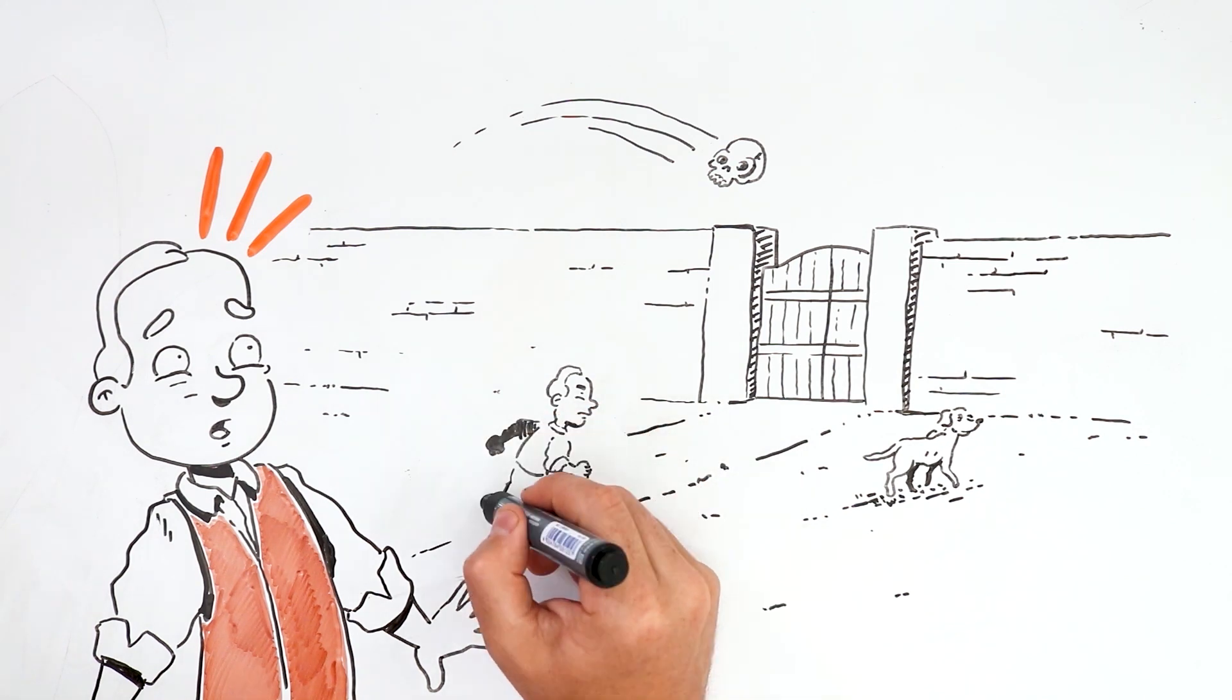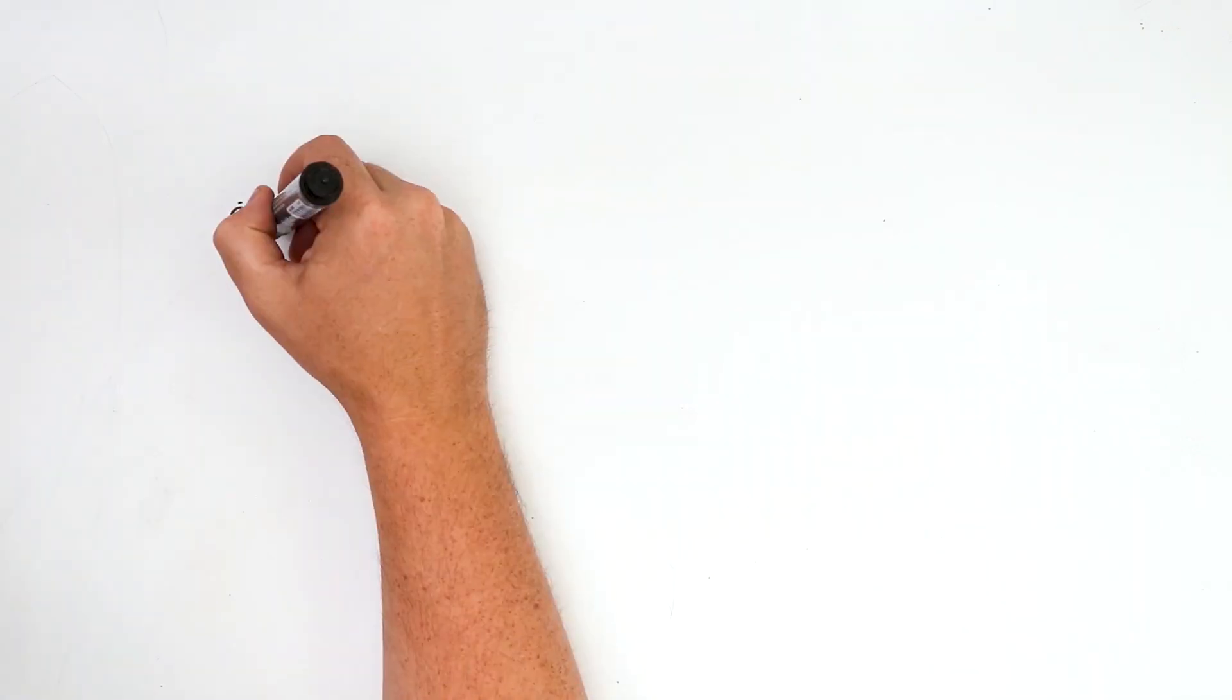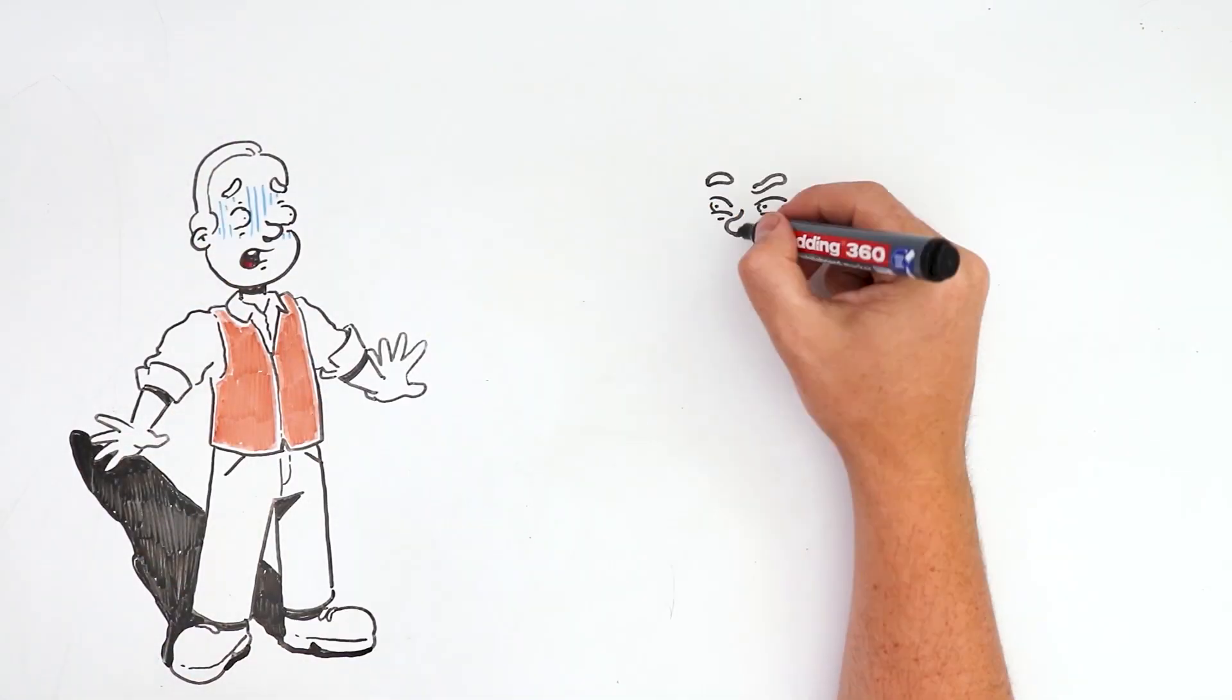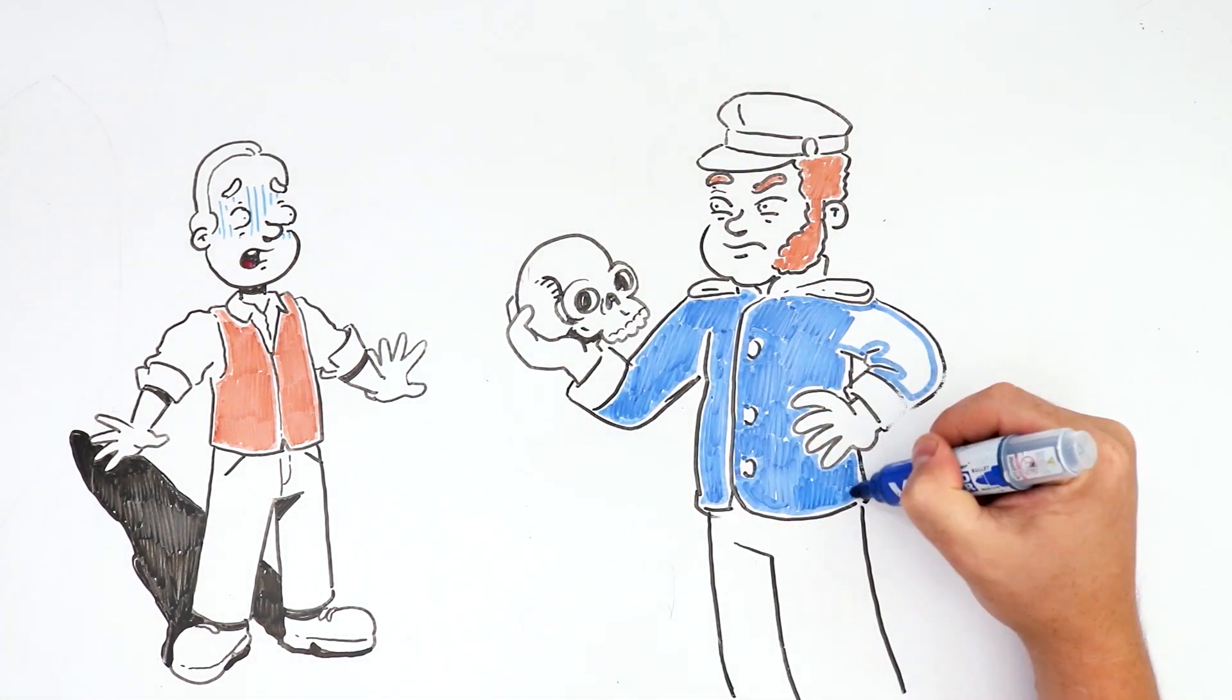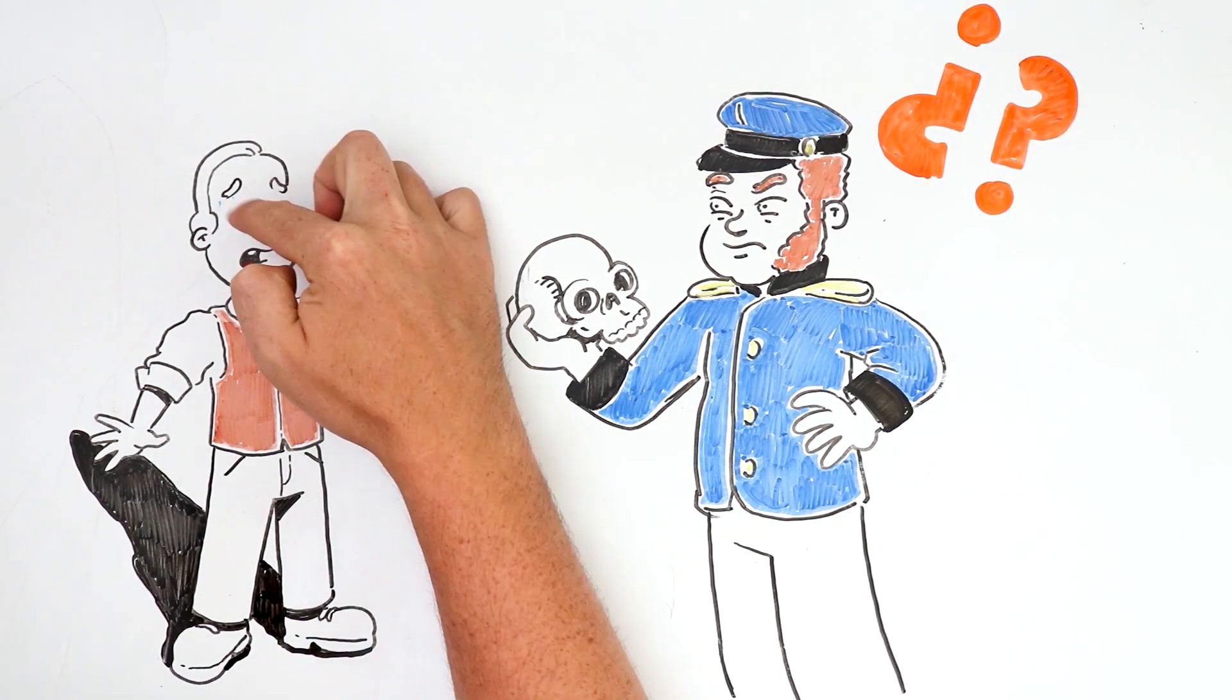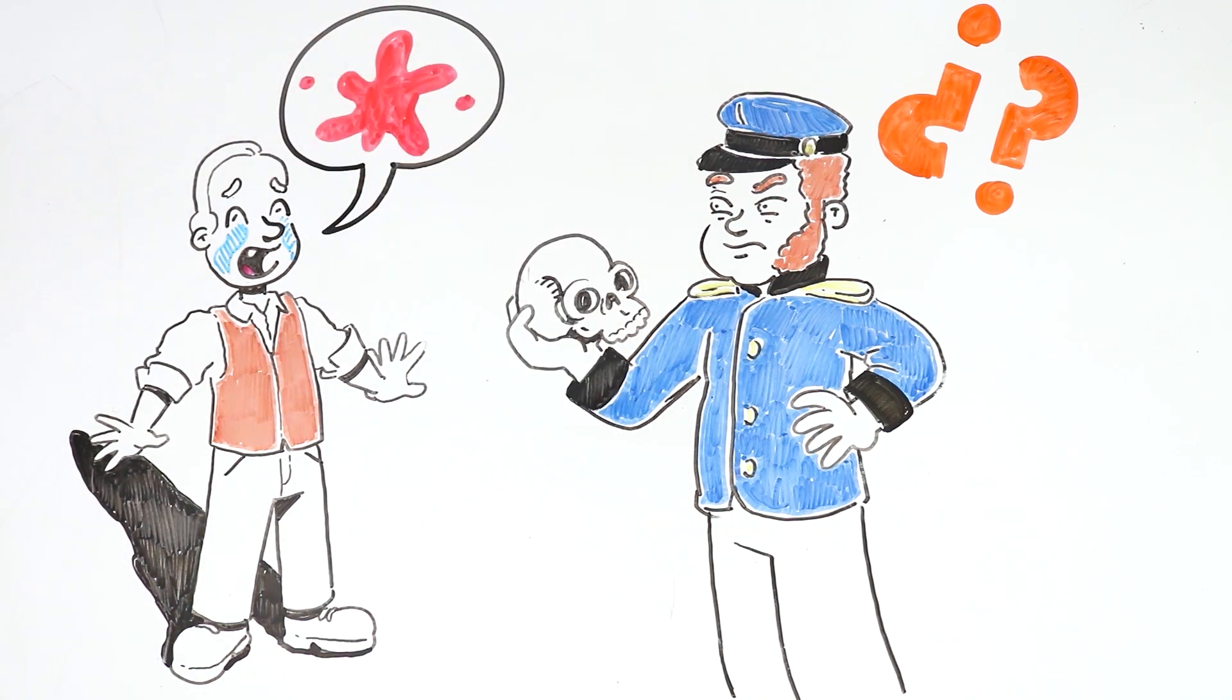He rushed to his front door to get out and recover the skull before anybody else could see it. However, when he reached the other side, he bumped into the town's sheriff, who was casually patrolling around there. The sheriff picked up the skull from the ground, and asked the farmer if he had anything to tell him. The farmer couldn't stand it anymore, fell on his knees and confessed his crime.